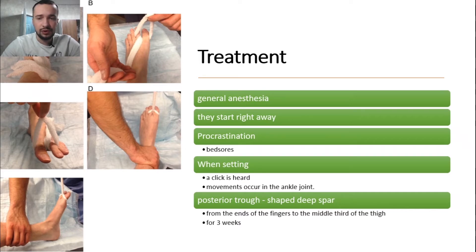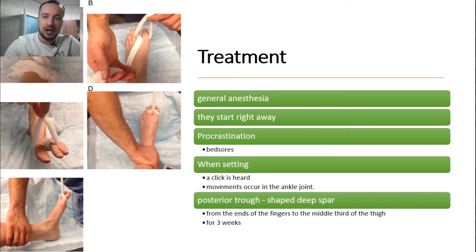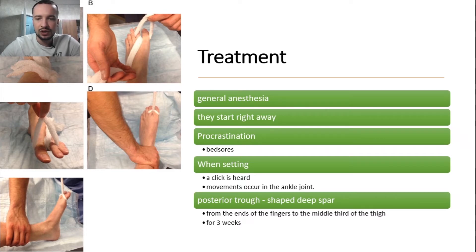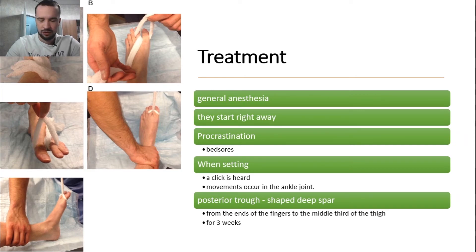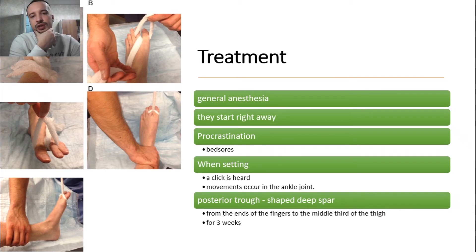General anesthesia is used. The removal of dislocation is started immediately after diagnosis — procrastination can lead to the formation of pressure sores at points of pressure from protruding bones and due to increasing edema. When setting, a click is heard and movement returns to the ankle joint. Apply a posterior trough-shaped deep splint from the ends of the fingers to the middle third of the thigh for three weeks. A picture shows how the reduction is performed.